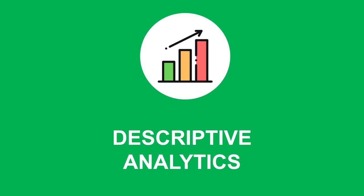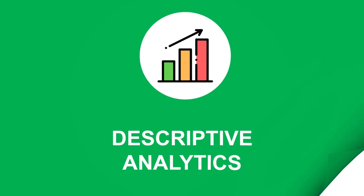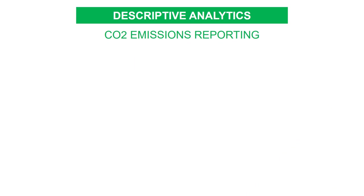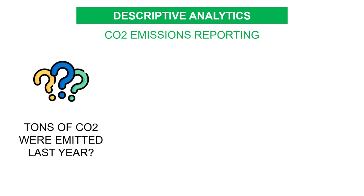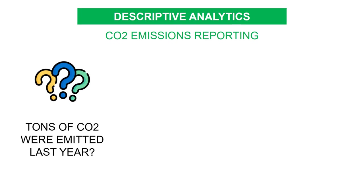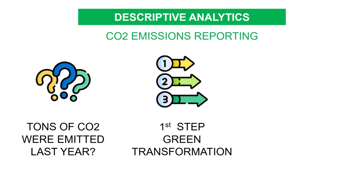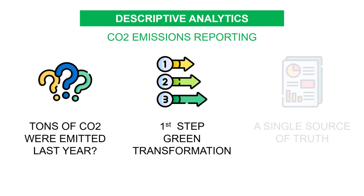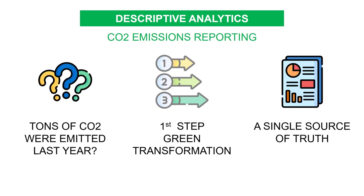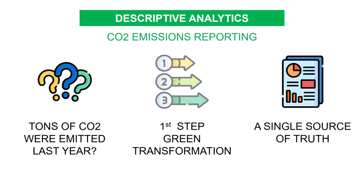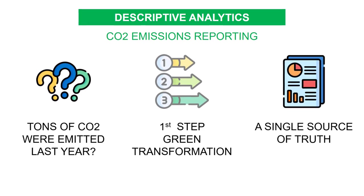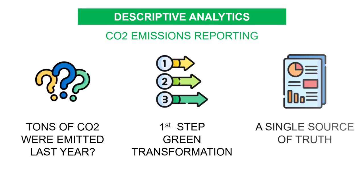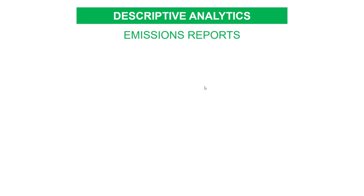Let's start with descriptive analytics — use data to describe past events, measuring CO2 emissions by geography, scope, or product. This is the first step of a green transformation. You need to set the baseline, building a single source of truth across the organization using data analytics.